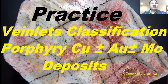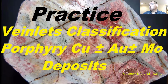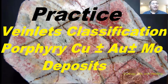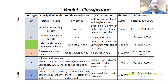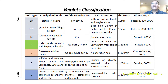This time we're going to talk about geology and we are going to do a practice about veinlets classification and porphyry copper-gold-molybdenum deposits that we saw in the previous presentation. For people who couldn't see the previous presentation, this is the veinlets classification from earliest to latest, and I'll put a link so anyone can see it.